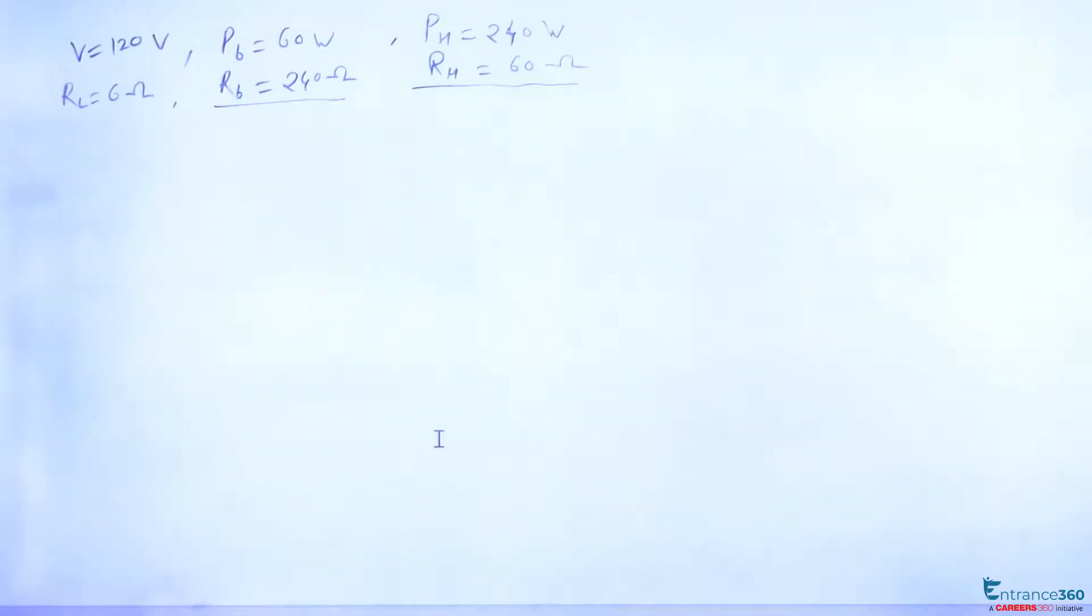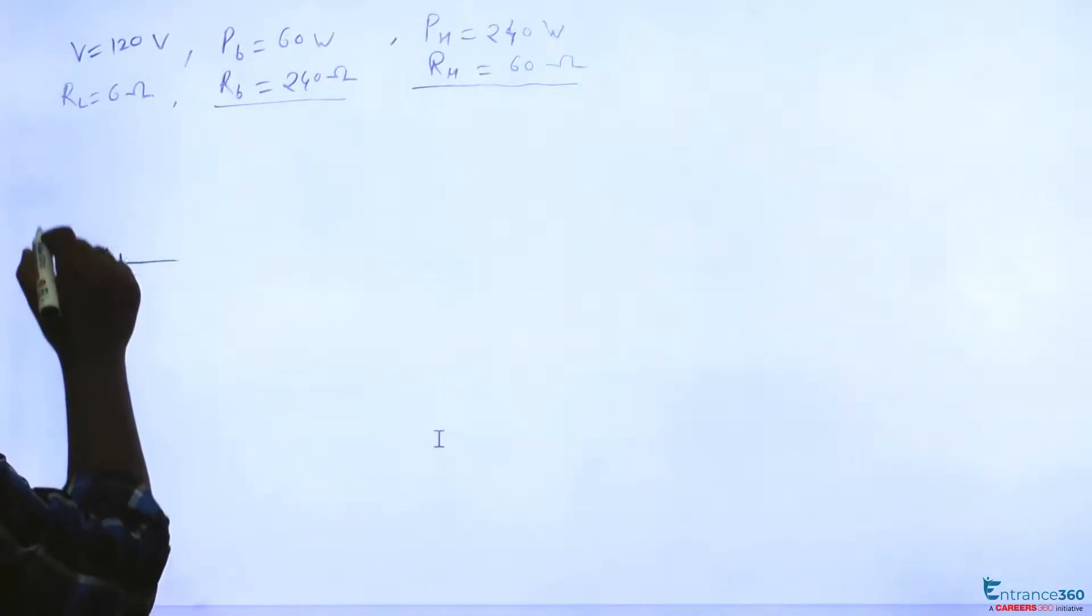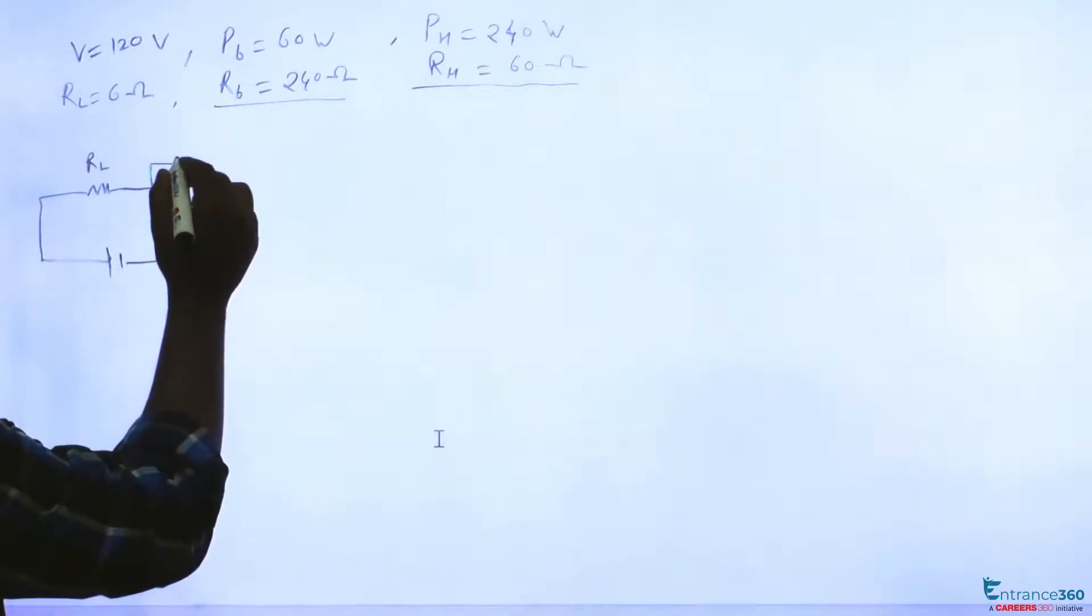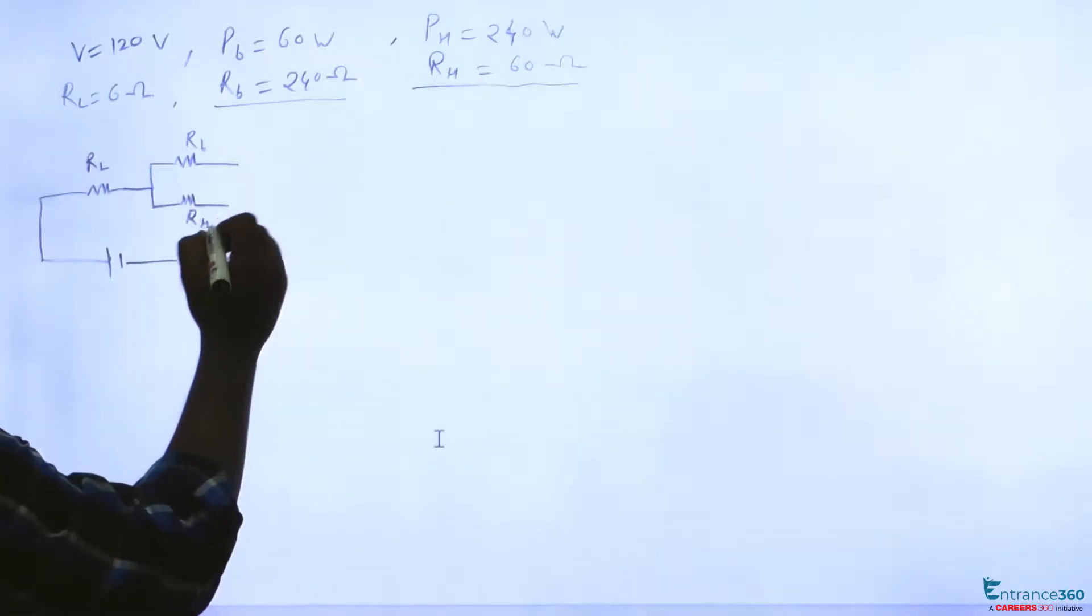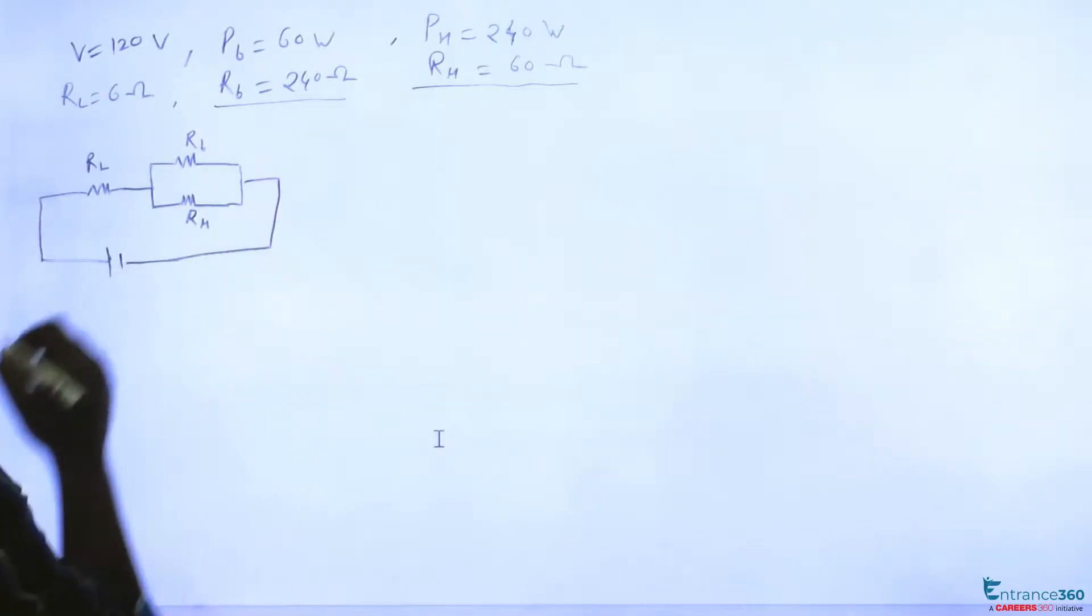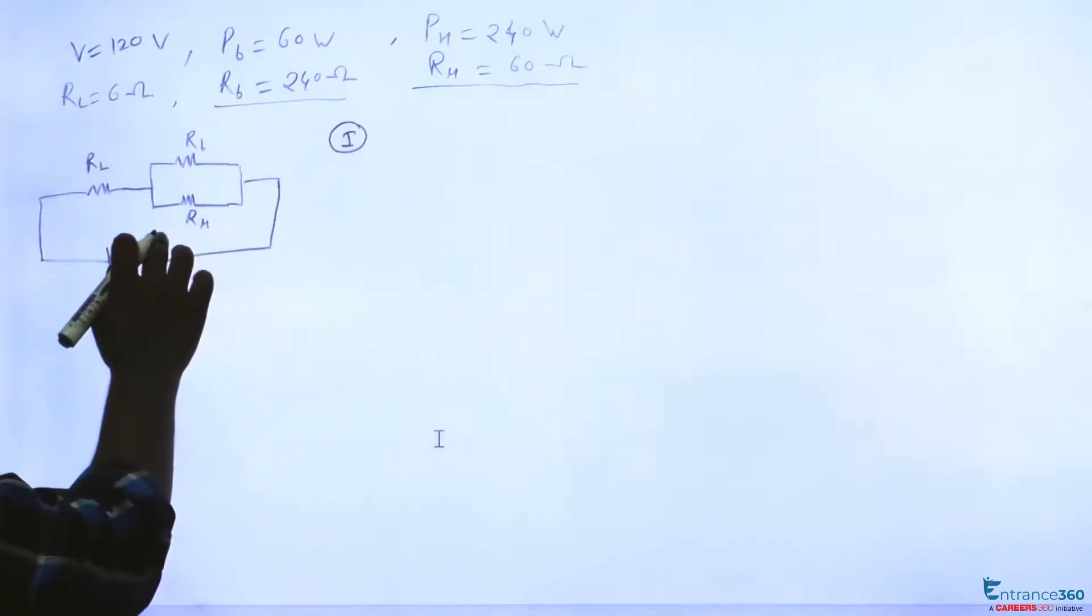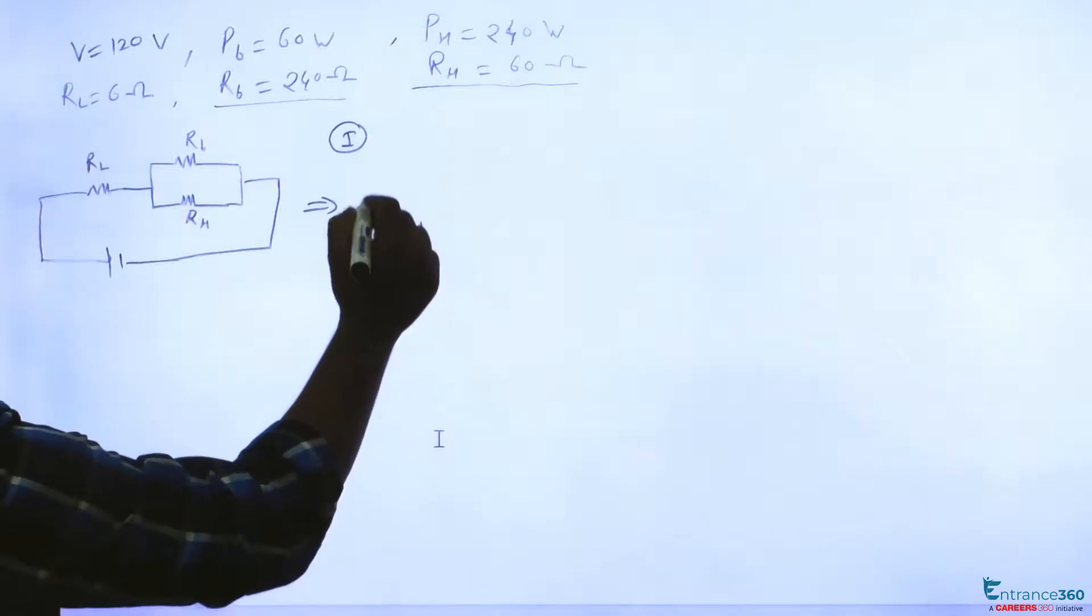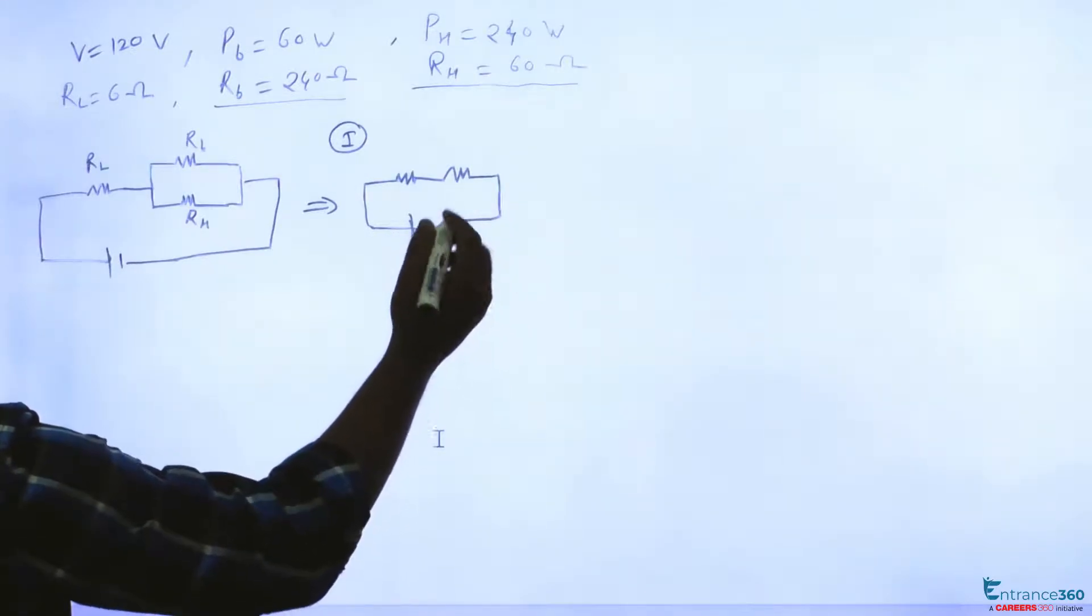In the first case the heater was switched off. So let's suppose this is our figure. This is the voltage source. Then there is some resistance due to lead wire, let's assume this is RL, and then we have a parallel combination of bulb resistance, let's suppose this is RB and RH. So in the first case, heater is switched off, so we didn't consider heater. Our final figure will simply become: this is voltage source, this is lead wire resistance, this is bulb resistance, RL and RB.